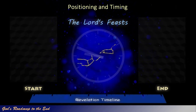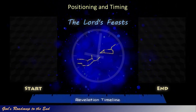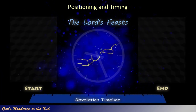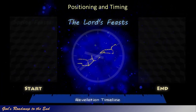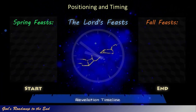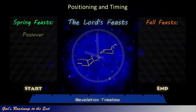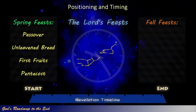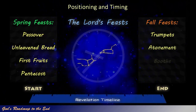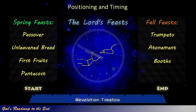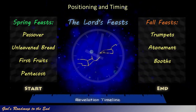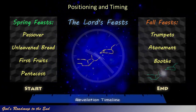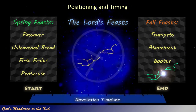There are seven feasts given to Israel to observe perpetually, found in Leviticus 23. They occur in two distinct seasons, commonly referred to as the spring and fall feasts. Those in the spring are Passover, Unleavened Bread, First Fruits and Pentecost. The fall season consists of the Feast of Trumpets, the Day of Atonement and the Feast of Booths. We will demonstrate how God uses a clearly recognizable pattern applied to both seasons, and how this pattern incorporates the Revelation 12 sign into the fall feasts.